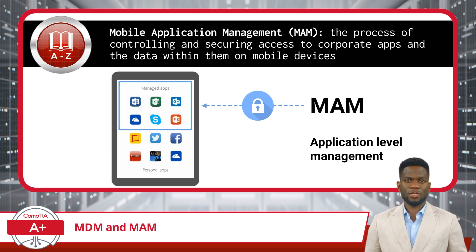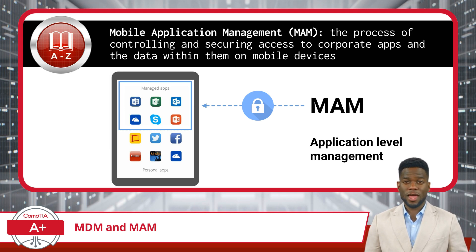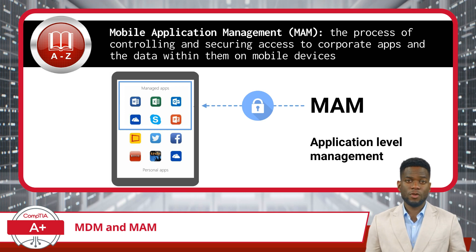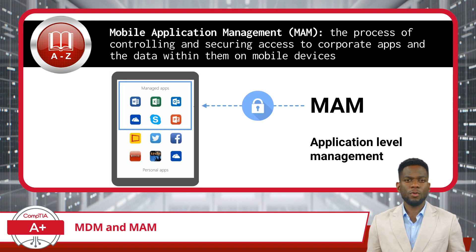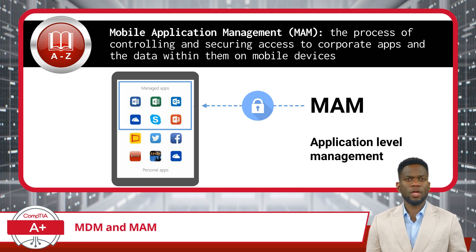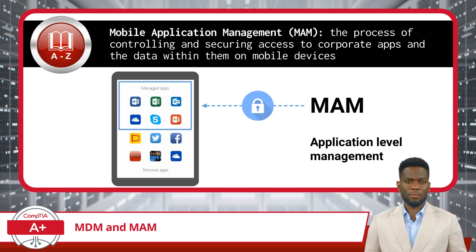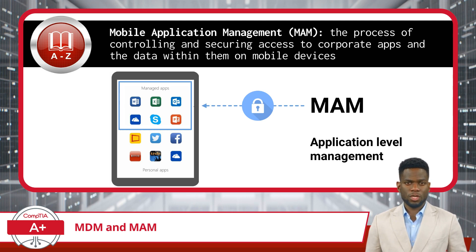Mobile Application Management allows IT departments to control which users can access certain managed applications, safeguard company data within those apps, and manage updates and configurations of software across mobile devices. This also includes the ability to wipe company data from individual applications without affecting personal data, providing an appropriate balance between user convenience and data security.